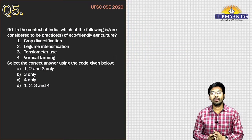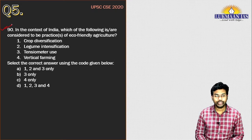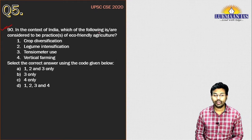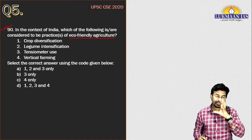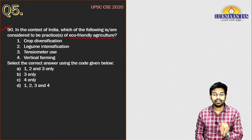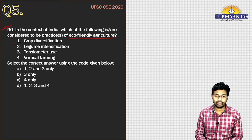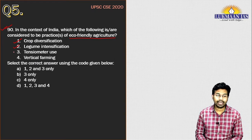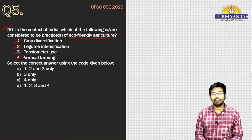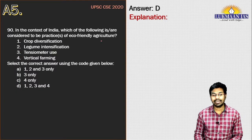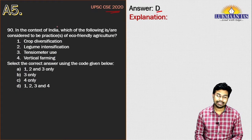The next question asks: in the context of India, which of the following are considered to be practices of eco-friendly agriculture? The options are: crop diversification — yes, correct; legume intensification — yes, correct; tensiometer use — correct; and vertical farming — also correct. So the correct answer for this question is option D, all of the above. This was from UPSC 2020, set A, question number 19.